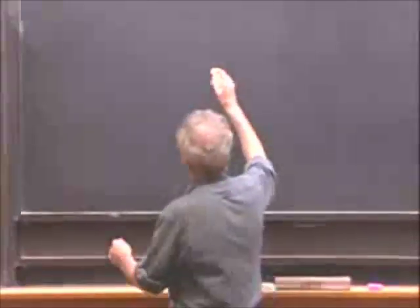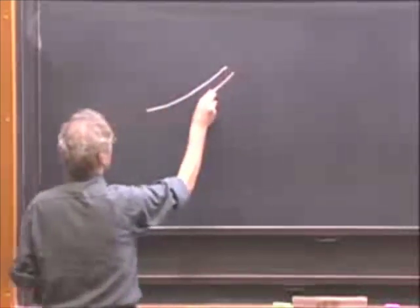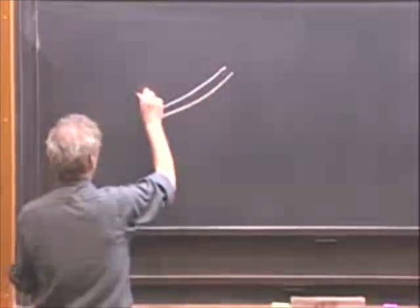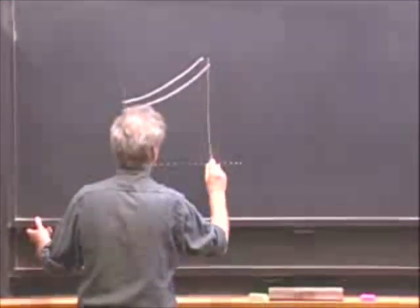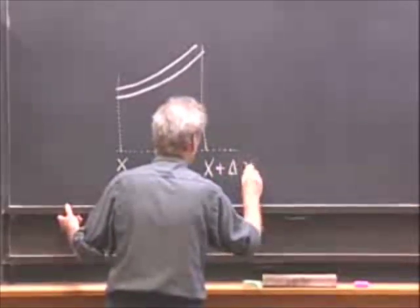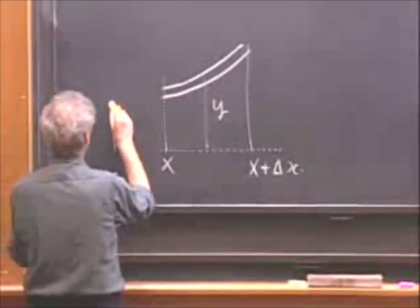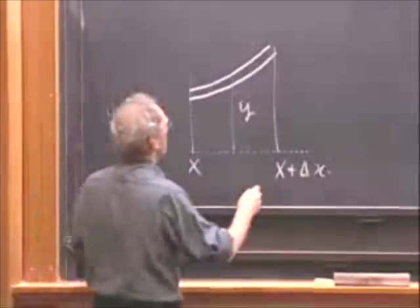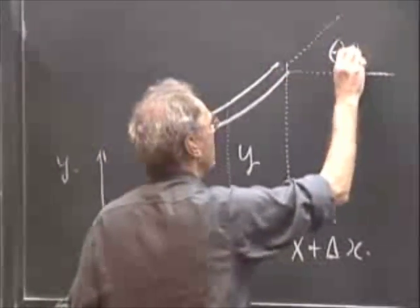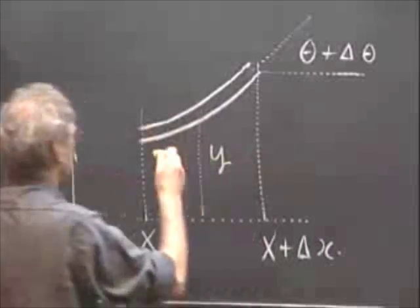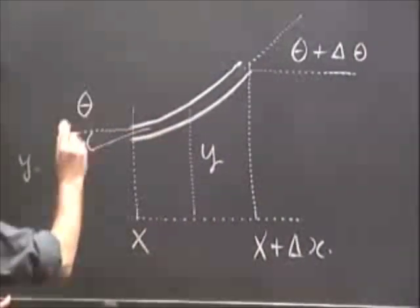I start here with a piece of that rope. Let's call this position X, and I call this position X plus delta X. I call this Y plus delta Y. I call this angle theta plus delta theta, and I call this angle theta.